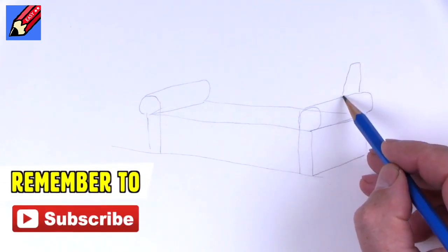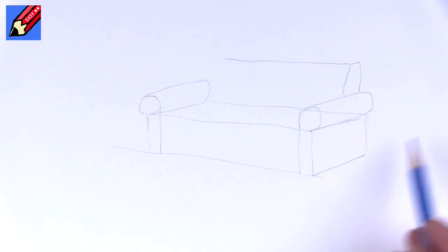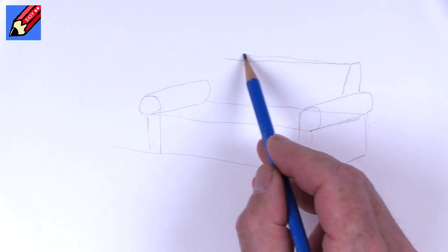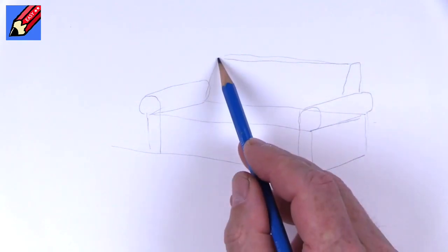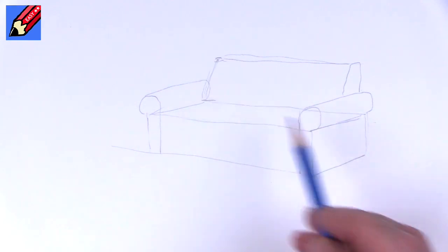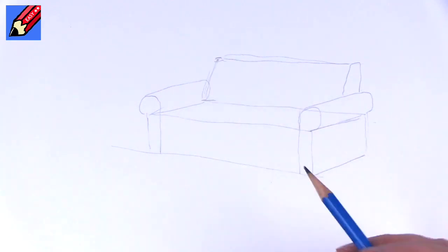Now we're going to need to have the back of the sofa like that, maybe a bit further over, that will sort of come down about there. So that gives us the basic sofa. Let's put some feet on there as well like that.